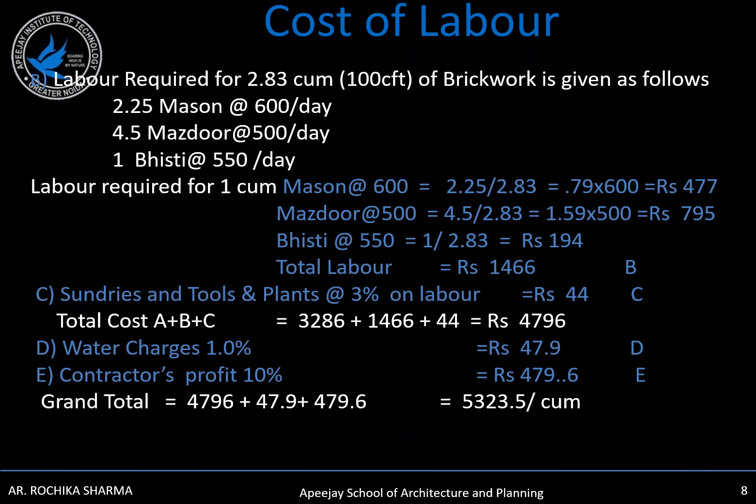For the cost of labor, it is given that 2.83 cubic meters of brickwork can be done by 2.25 masons and 4.5 mazdoor and 1 bhishti. Using the given rates, the cost for masons will be Rs. 477, for mazdoor Rs. 7.95, and for bhishti Rs. 1.94. So total labor cost will be Rs. 1466.